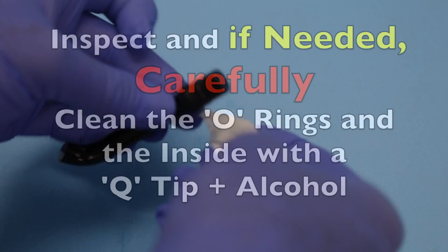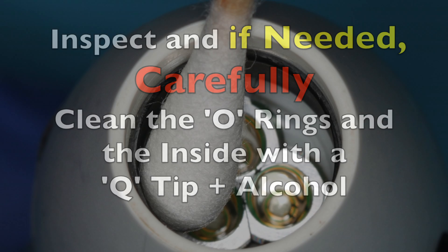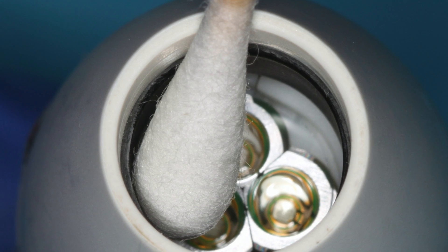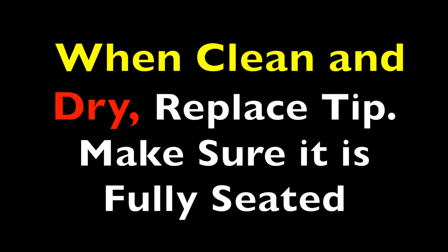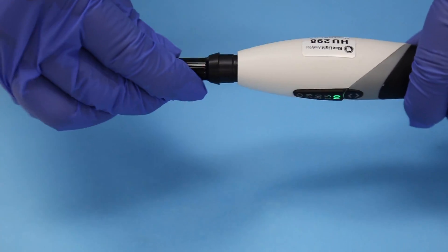If needed, carefully clean the area around the O-rings. Try and avoid touching the actual LEDs. And then when everything is clean and dry, carefully put the light guide back onto the curing light. Make sure you hear it click and make sure it's gone down all the way.